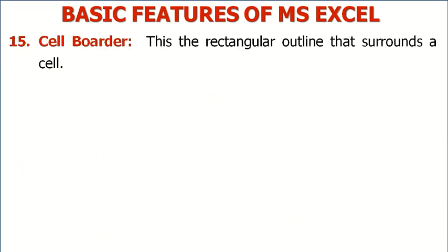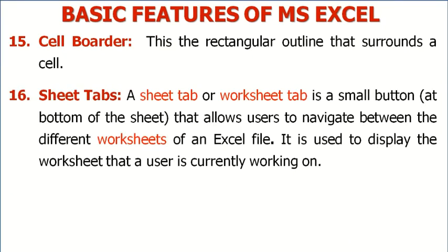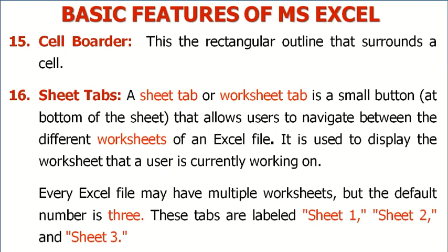Next feature is cell border — this is a rectangular outline that surrounds a cell. Next, sheet tabs. A sheet tab or worksheet tab is a small button located at the bottom of the screen that allows users to navigate between the different worksheets of an Excel file. It is used to display the worksheet that a user is currently working on. Every Excel file may have multiple worksheets, but the default number is 3. These tabs are labeled sheet 1, sheet 2, and sheet 3.